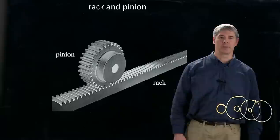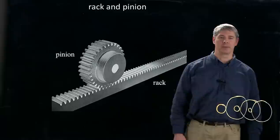Another way to convert rotational motion to linear motion is using rack and pinion. So if we have a motor spinning this pinion, then the rack is going to move linearly underneath the pinion.